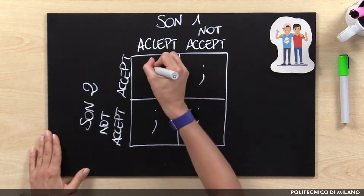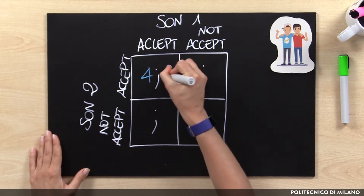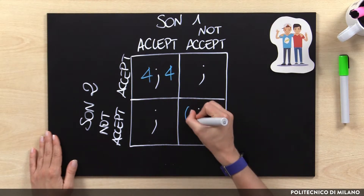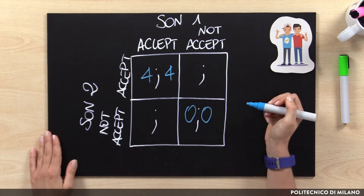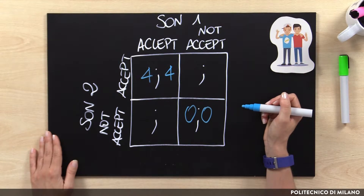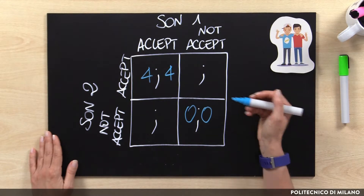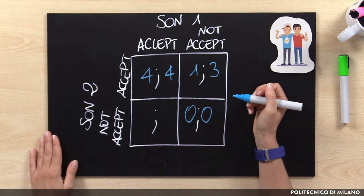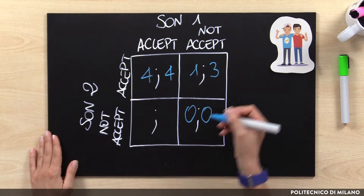Each of the sons is receiving four euros if both sons accept the agreement. On the contrary, if none of them is accepting, both of them receive nothing. In the intermediate situation, if Son 1 is accepting and Son 2 is not, Son 1 is receiving one euro because he accepted, but Son 2 is receiving three euros. The vice versa is also true.